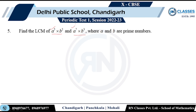Question 5: Find the LCM. In the LCM, the prime number 'a' must appear — I need to decide the exponent. Between a^5 and a^7, a^7 must be there. Then between b² and b³, b³ must be there. So my LCM is a^7 · b³.